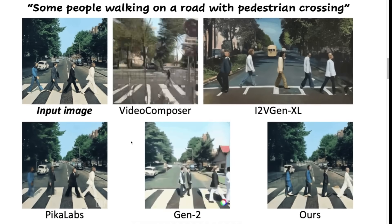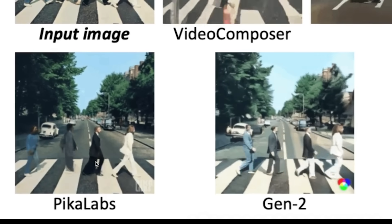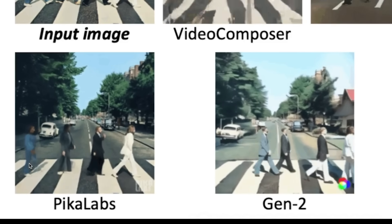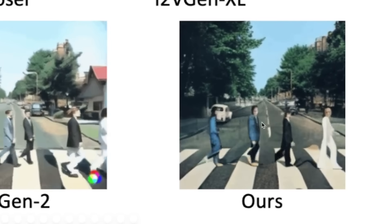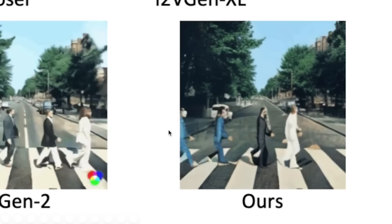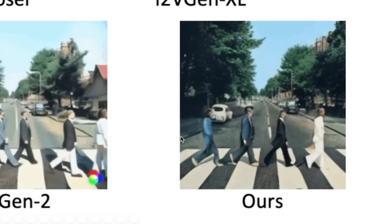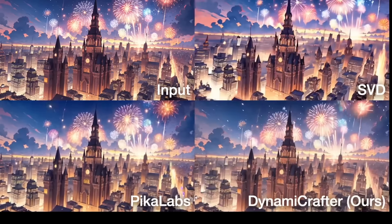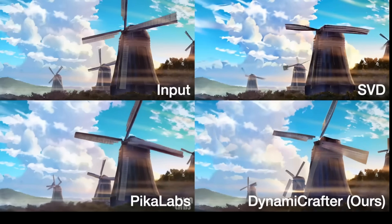Video Composer is, of course, a bit of a mess. Pika does a weird thing with Paul and Ringo moonwalking, and George doing the pee-pee dance. While I wouldn't necessarily say Dynamic Crafter is blowing me away in terms of its output, it is at least coherent. Overall, Dynamic Crafter does look very promising — here are a couple more shootouts against Stable Diffusion Video and Pika Labs.